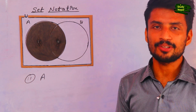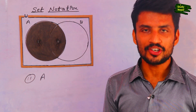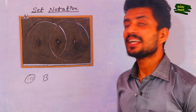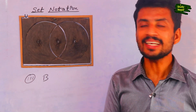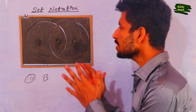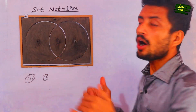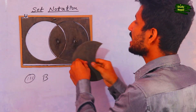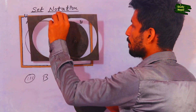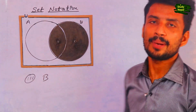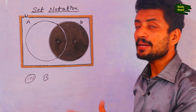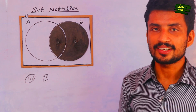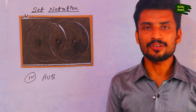Now let's go to the third topic, which is B. I am going to show you the portion of B in this Venn diagram. For B, you have to keep B and remove everything else — removing the A portion and the outside complement portion. This is the shaded portion of B in the Venn diagram.